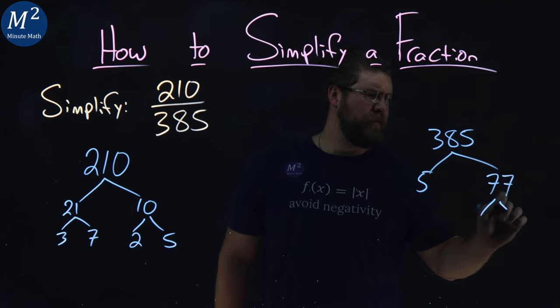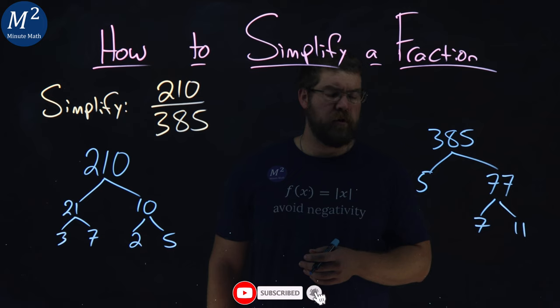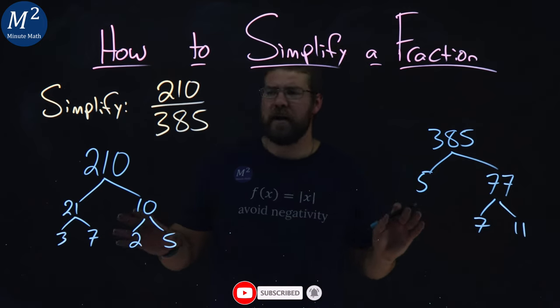Now 77 is just 7 times 11, and we have prime numbers now left over. So we have the prime factorization of each number.